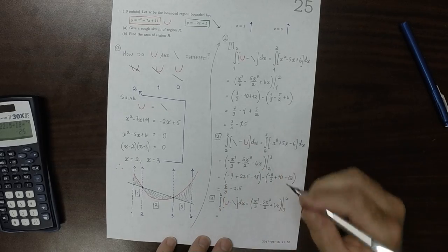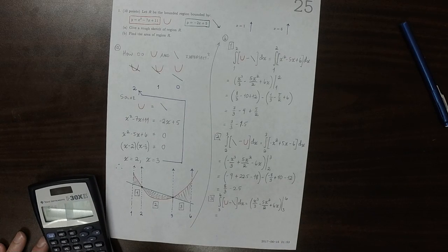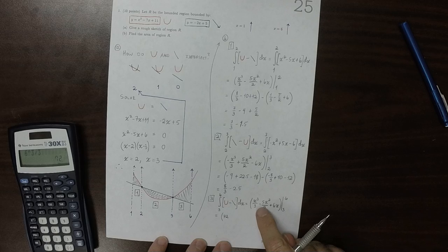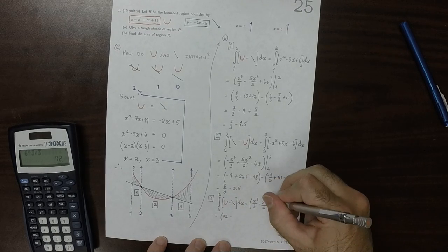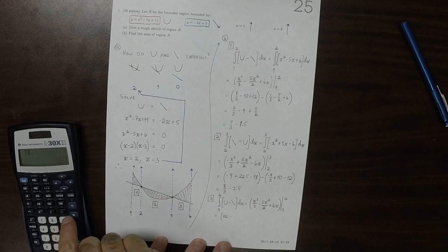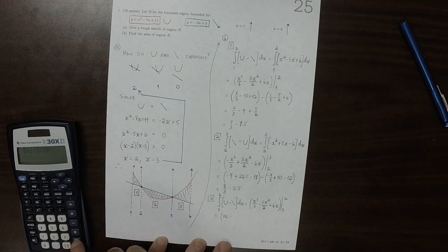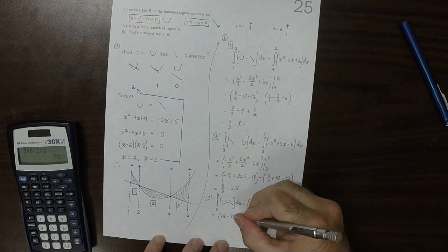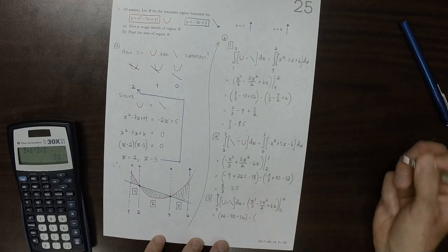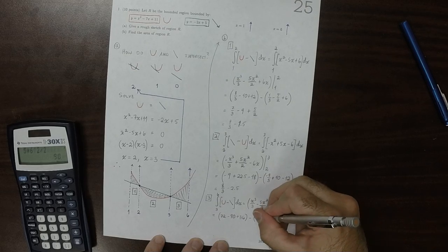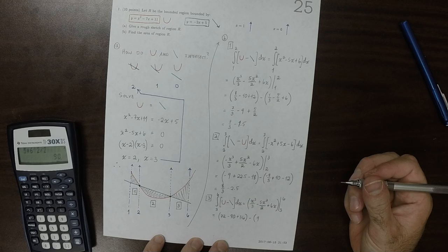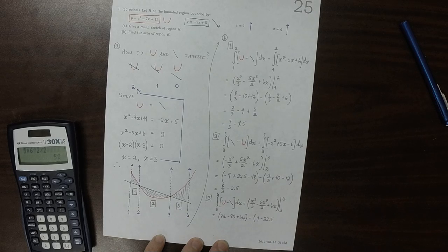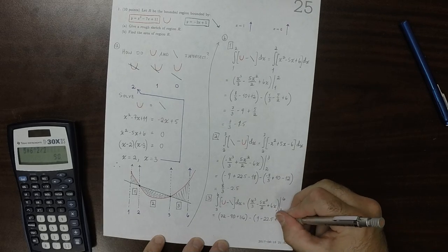So at 6, so at 6, 6 cubed over 3, that simplifies, so 6 cubed over 3 is 72, and then minus 5 times 6 squared over 2, so minus 90, and then plus 36, and then minus now, minus 9, minus 22 and a half, and then plus 18.